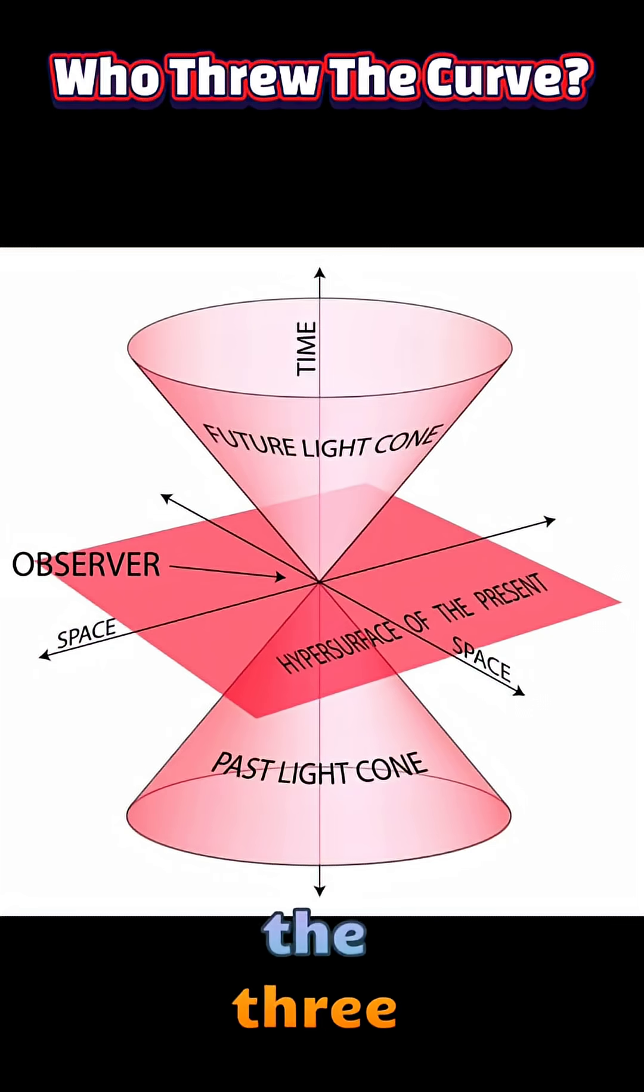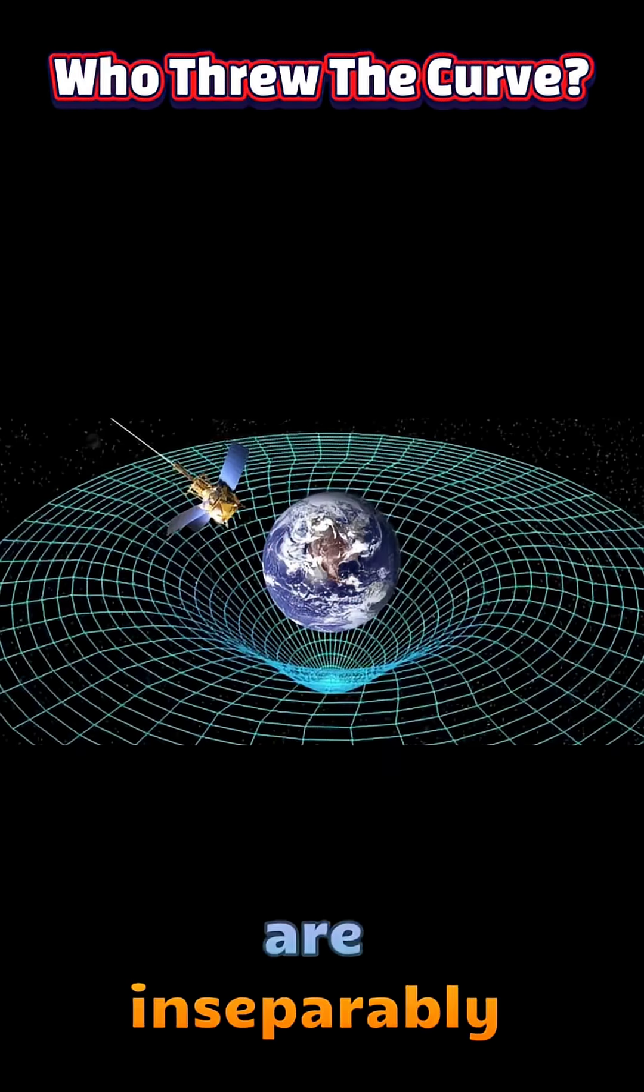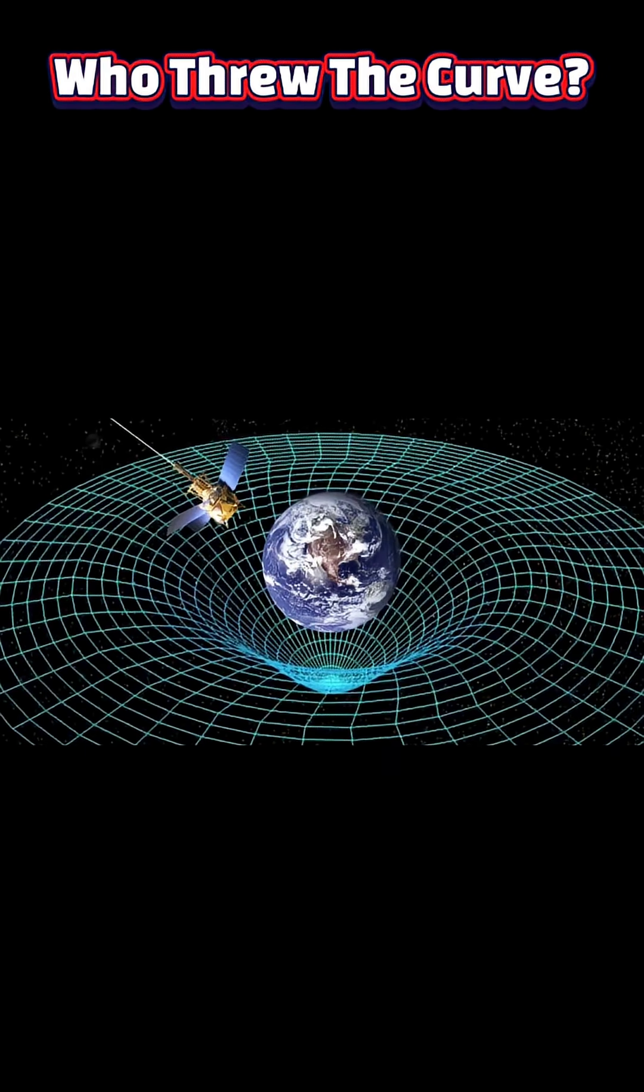In this framework, the three familiar dimensions of space—length, width, and height—are inseparably linked with the dimension of time. An event in the universe is not just a location in space, but also a moment in time, requiring four coordinates to describe it fully.